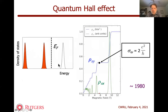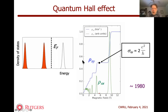If the Fermi level lies in a gap, it turns out you get a precisely quantized result: first, zero longitudinal conductivity, so the system behaves like an insulator in the sense that an electric field in the x direction gives no current in x. But instead, an electric field in the x direction gives a current in the y direction, and the conductivity is an integer times e² over h. The integer has to do with how many Landau levels you've filled and is called the Chern number. The resistivity is at h over e², so the conductivity is at two in fundamental units — that's the famous quantum Hall effect.